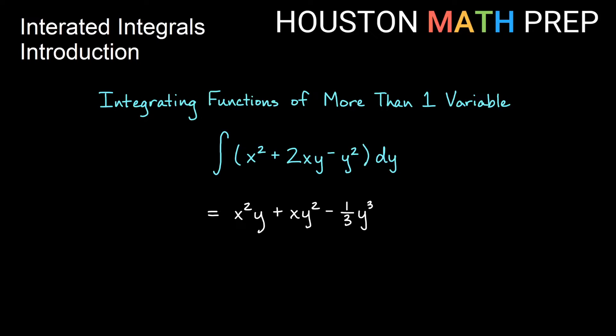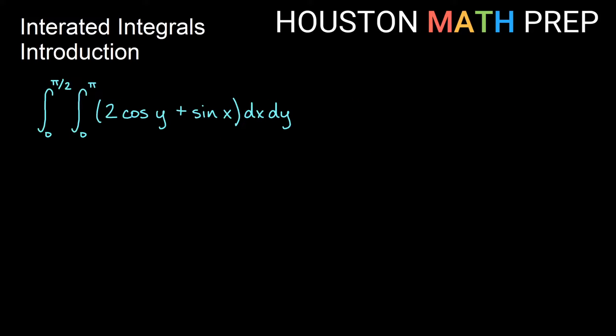We also have to add our constant of integration, plus c. Since we're integrating with respect to y, remember that taking the derivative of any term that only has an x in it would also have a derivative of 0, just like a constant. So we might say not just plus some constant, but plus some constant and any equivalent expression involving only x. When we look at doing this process and actually iterating the integrals — taking one integral and then another, one at a time — these iterated integrals are also called multiple integrals.